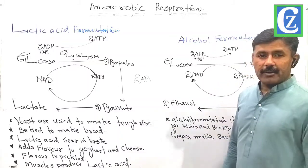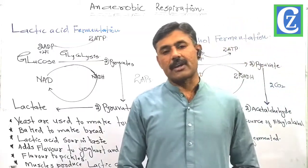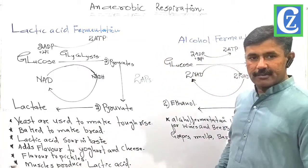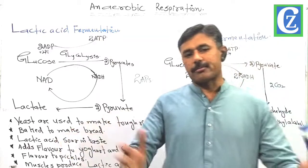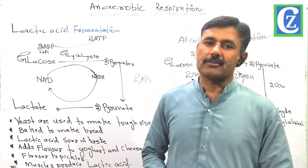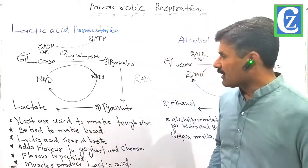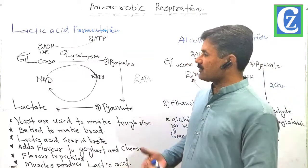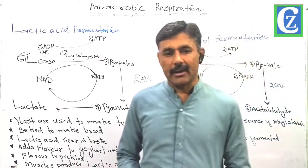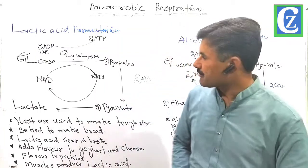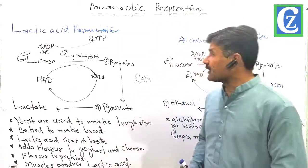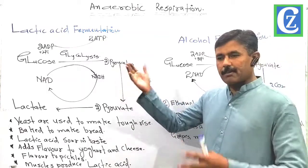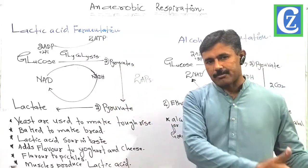We are going to start anaerobic respiration. We are studying respiration and we have studied glycolysis, which is a process where glucose breaks into two molecules of pyruvates. These pyruvates can later break by several ways — they can break anaerobically and they can break aerobically. What are the different ways pyruvates can break in the presence of oxygen and in the absence of oxygen?